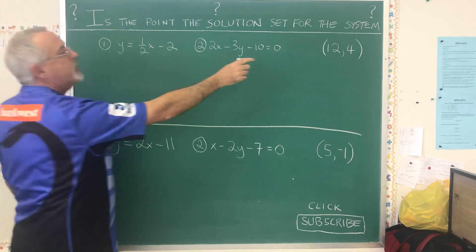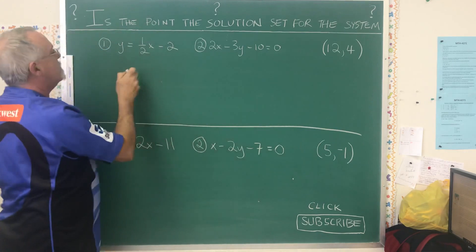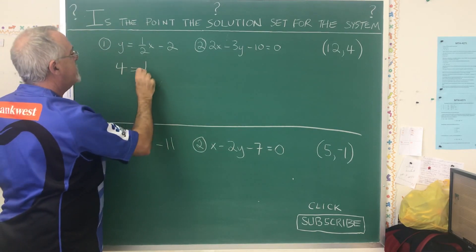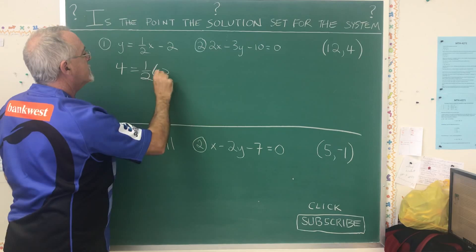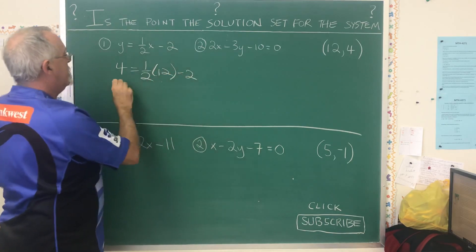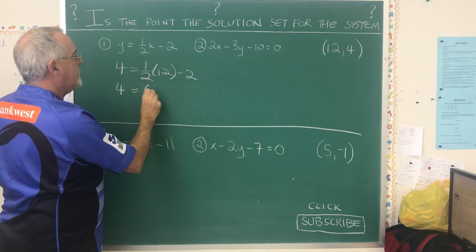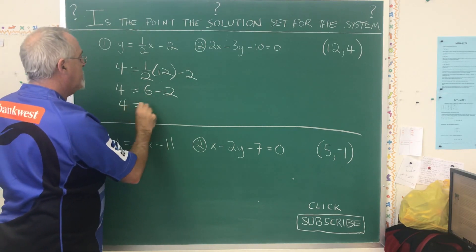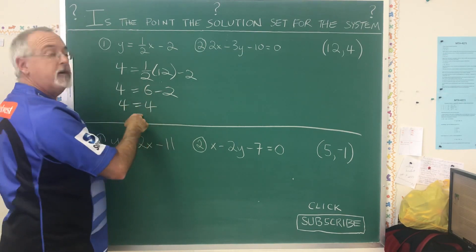Let's start with plugging 12, 4 into this equation. The y is the 4, the x is the 12, half of 12 is 6, and of course 6 minus 2 is 4. This verifies.